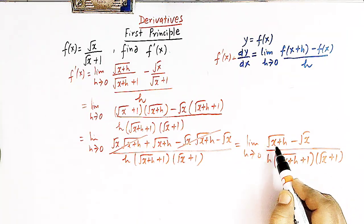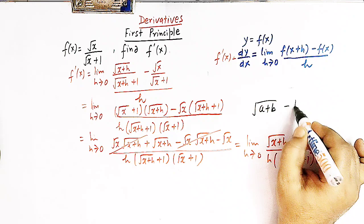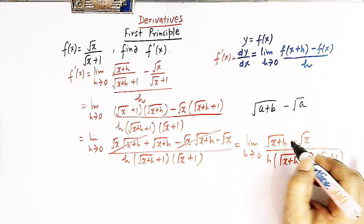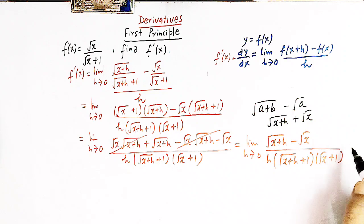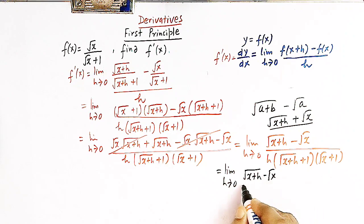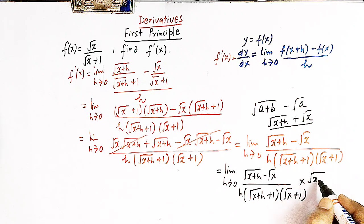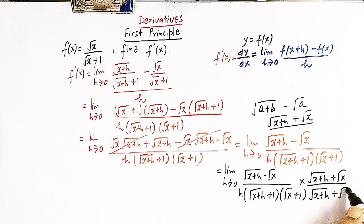Now we have a term of the form √(x+h) − √x. What we will do is rationalize the numerator and denominator by multiplying by the conjugate √(x+h) + √x. So we multiply both numerator and denominator by √(x+h) + √x, giving us limit h tends to 0 of [√(x+h) − √x] × [√(x+h) + √x] in the numerator, over (√(x+h) + 1)(√x + 1)(√(x+h) + √x).